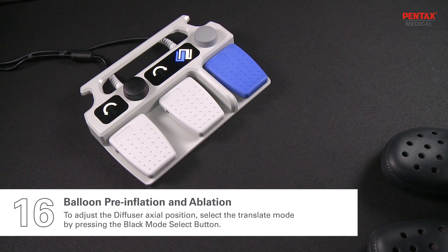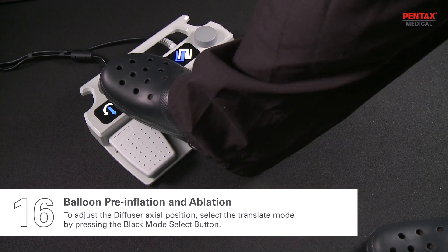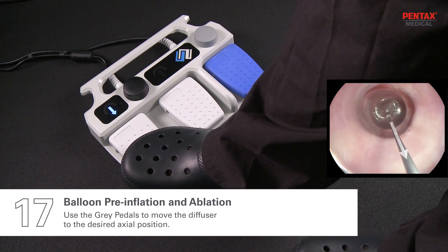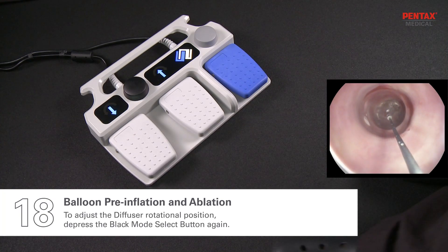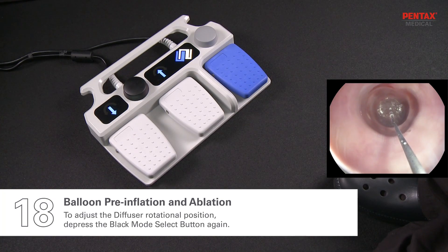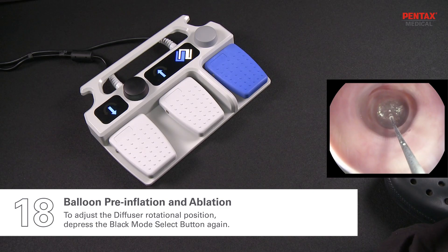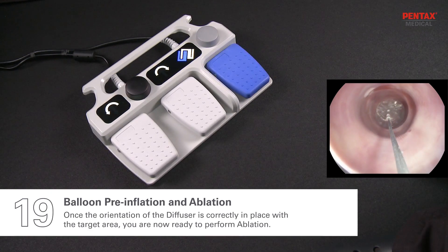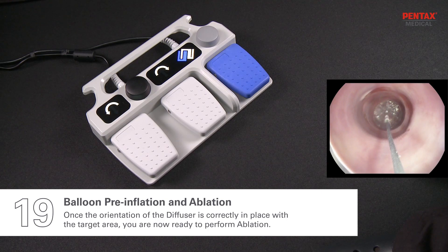To adjust the diffuser axial position, select the translate mode by pressing the black mode select button. The foot pedal will display arrows pointing up and down. Use the gray pedals to move the diffuser to the desired axial position. To adjust the diffuser rotational position, depress the black mode select button again. Rotational arrows indicating clockwise and counterclockwise direction will be illuminated. Once the orientation of the diffuser is correctly in place with the target area, you are now ready to perform ablation.